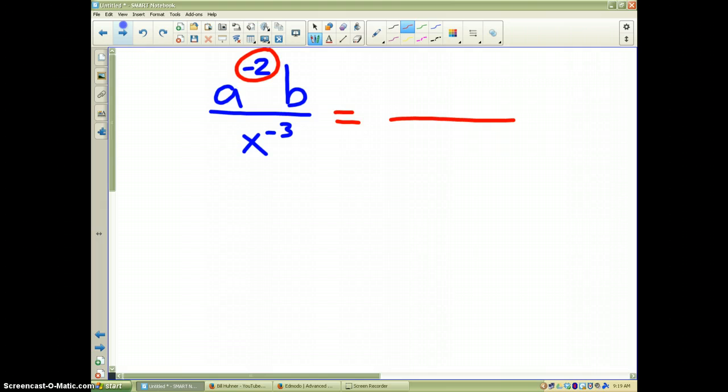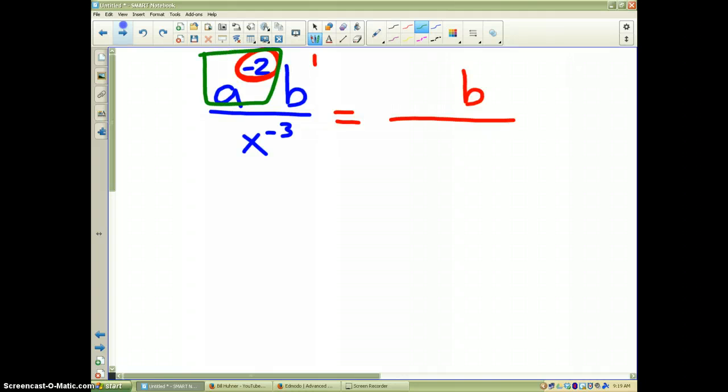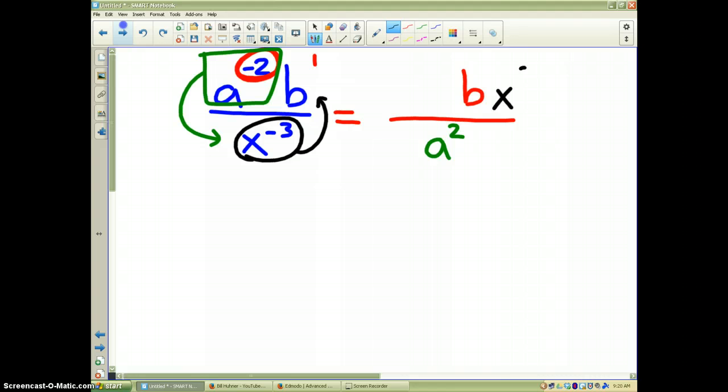Now, I'm going to draw a fraction line, and the first thing I notice is b is to the positive 1 power. So, b is going to stay in my numerator. a, as I've circled already, a has a negative 2 power. So, I'm going to take a and its negative power and move it to the other side of the fraction. So, I'm going to take a and move it to the denominator and change its power to positive 2. Last, in the denominator of my original problem, I have x to the negative 3 power. Well, that's going to move up into the numerator and become positive 3.